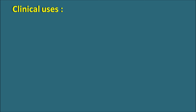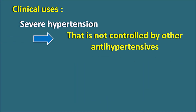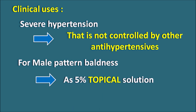Regarding clinical uses, one important use is in the treatment of severe hypertension. For normal hypertension this drug is not preferred because it produces variable side effects; it is only used for severe hypertension where other drugs cannot control it. In such conditions, Minoxidil can be given because it reduces both systolic and diastolic blood pressure. Similarly, this drug can be used for male pattern baldness — Minoxidil is given as a topical solution at 5% strength to increase hair growth in men.